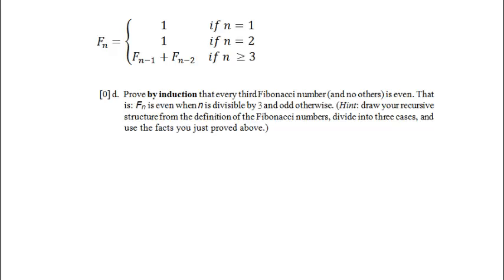Welcome to problem 14 part D of the Computer Science 121 2013 winter 2 practice final exam. We've already previously proven a few properties of adding even and odd numbers, and we're going to use those now in this proof about properties of the Fibonacci numbers.